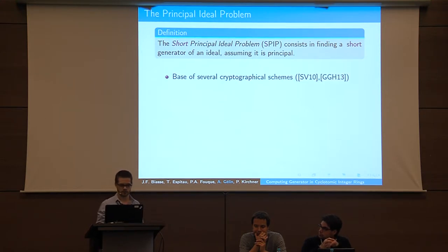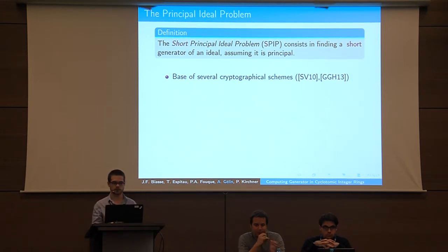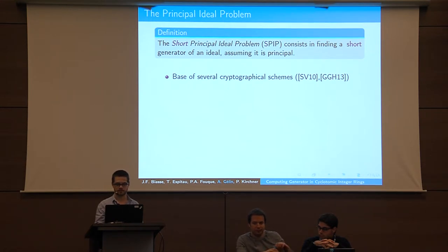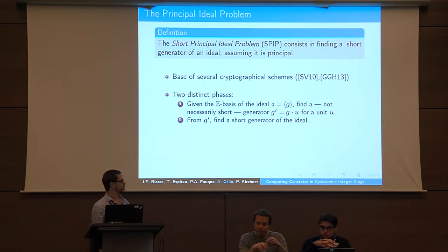This has applications in cryptography — it was already presented in the previous talk — specifically the Smart-Vercauteren encryption scheme and the multi-linear map of Garg, Gentry, and Halevi. For solving the short principal ideal problem, we have two distinct parts.